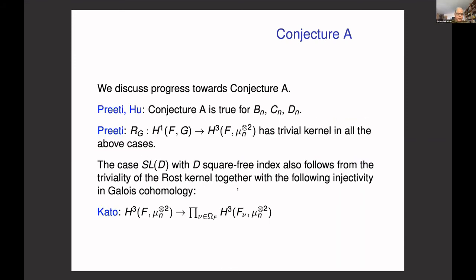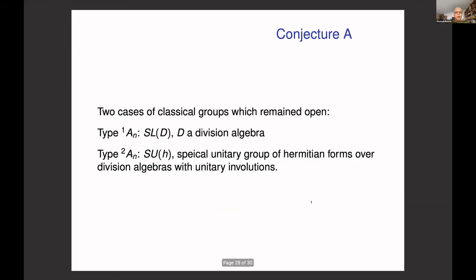Progress on Conjecture A: Preeti proved the conjecture for all groups of type B_n, C_n, and D_n. In fact, Preeti proves that the Rost invariant rG: H¹(F, G) → H³(F, μ_n^⊗2) has trivial kernel in these cases. Combining with Kato's theorem and the square-free index case of SL_D, one gets the conjecture for those cases as well. Two cases remained open: the general SL_D (inner type A_n) and the special unitary group of hermitian forms over division algebras with unitary involutions (outer type A_n).